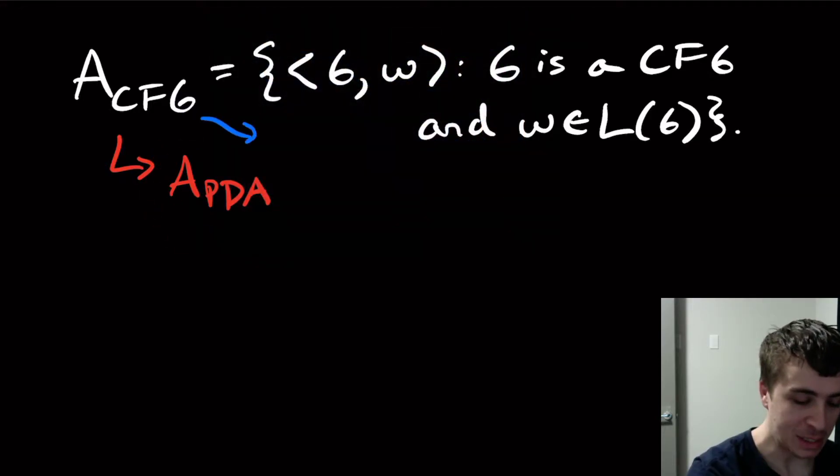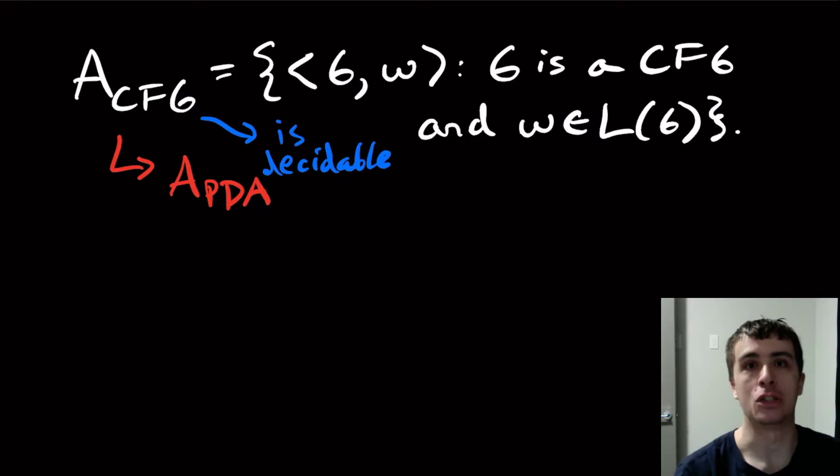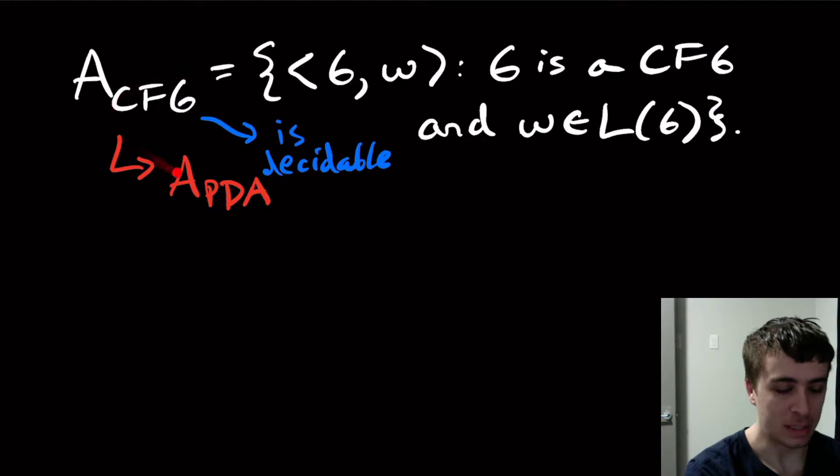And I claim that A_CFG is decidable. So one thing to keep in mind is that CFGs are non-deterministic in that we may not know necessarily which rule to apply, and we can't convert it to a deterministic grammar, because we know that deterministic PDAs are not the same as non-deterministic PDAs. They're not the same in power. So I can't convert it to a deterministic thing. So we'll have to work with the CFG or the PDA directly, but we're going to work with the CFG because it turns out to be a lot easier to do.